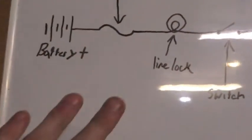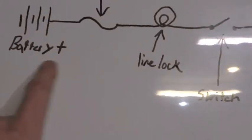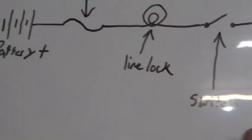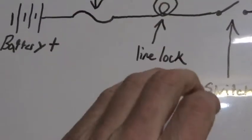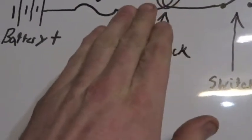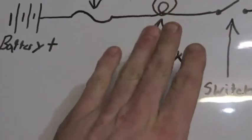This is pretty much the whole wiring diagram for it. This is your battery positive and this is your battery negative. So this is your line lock. This is actually an emblem for a light bulb, but same thing. The line lock needs a positive and negative. It's a load.